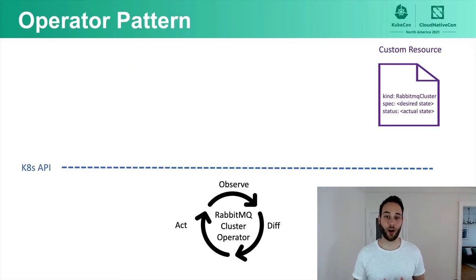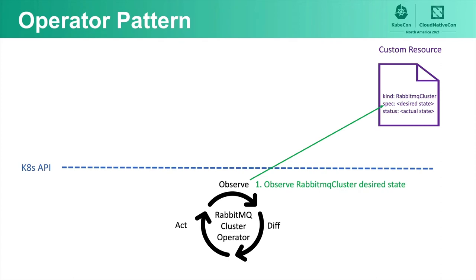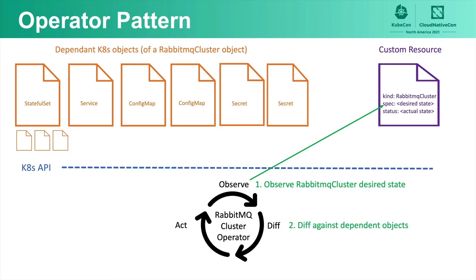The RabbitMQ cluster operator follows the operator pattern. Like any Kubernetes operator, it has a controller running in the observe-diff-act loop, acting as a client to the Kubernetes API. It defines a custom resource definition — in our case, kind RabbitMQCluster. It watches for the RabbitMQ cluster's desired state, diffs against the actual state by comparing dependent Kubernetes objects, then creates, updates, or deletes those dependent objects and updates the status of the custom resource.